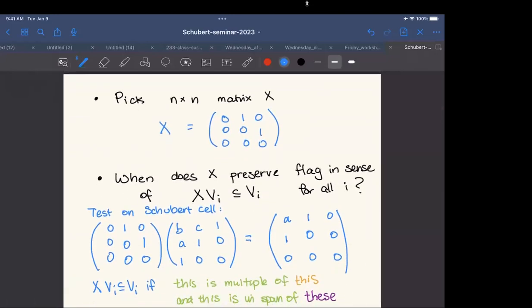That's where Hessenberg varieties are. To think about what Hessenberg varieties are, I'm going to start with a thing that is a Hessenberg variety, but it is not all Hessenberg varieties. I want to just start by picking an n by n matrix, and the thing in blue is the one we're going to start with. And we're going to ask the question, when does x preserve a flag, in the sense that x sends the ith part of the flag into the ith part of the flag for all i. The way we're going to approach this is to test it on individual Schubert cells.